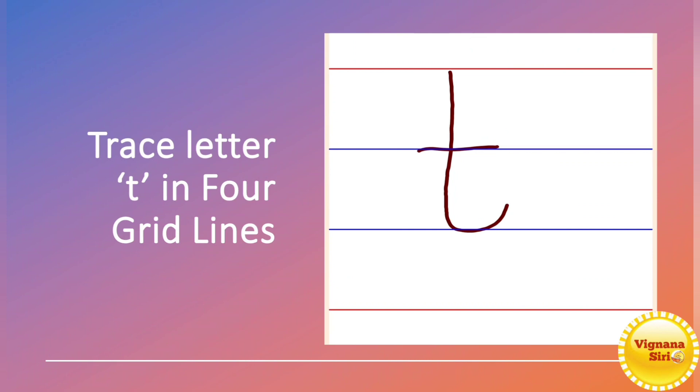This is the way you have to write the small letter T. Now I will show how to write the small letter T — tracing, all those things. Observe carefully. So first write a standing line. At the end of the standing line, a right curve — sorry, up curve, small up curve. And then in the middle of the standing line, a sleeping line. This should be a smaller one.